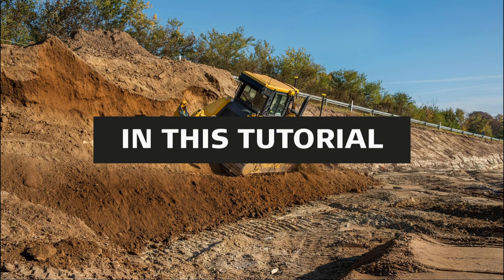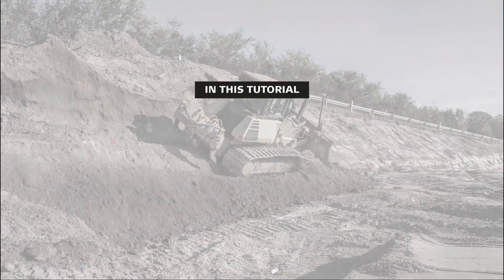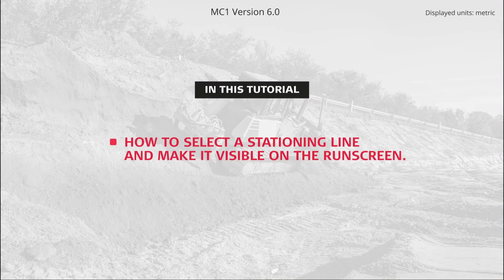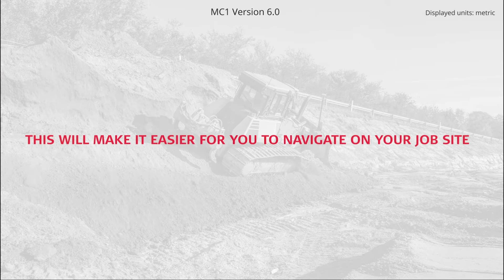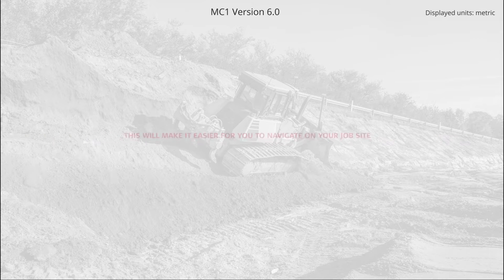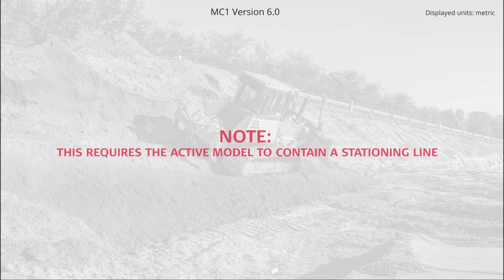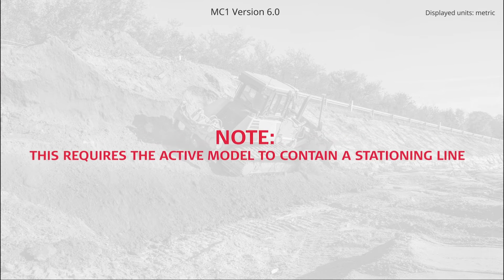In this tutorial, you will learn how to select a stationing line and make it visible on the run screen. This will make it easier for you to navigate on your job site. This requires the active model to contain a stationing line.